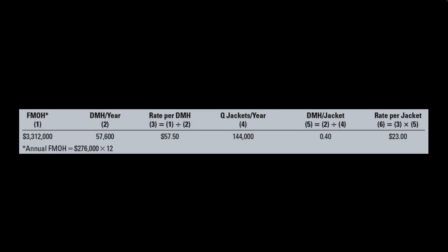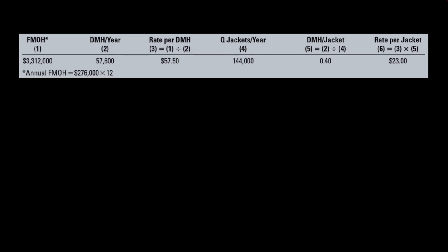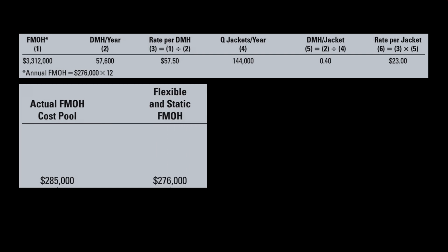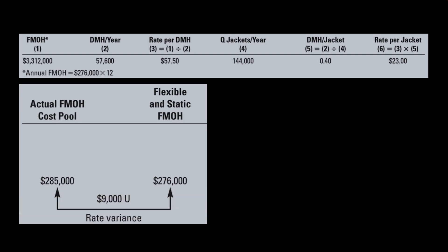We can calculate the rate per jacket: $57.50 per machine hour multiplied by 0.4 hours per jacket equals $23 per jacket. Now let's look at the actual overhead for a single month, which was $285,000. Comparing that to the flexible budget — which equals the static budget — of $276,000 per month, the difference is the flexible budget variance, which for a fixed item is also the rate variance: $9,000 unfavorable, because the actual cost is higher than budgeted.